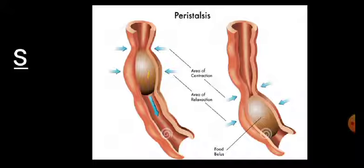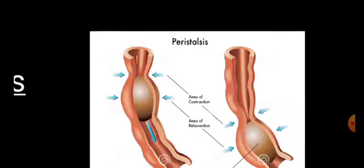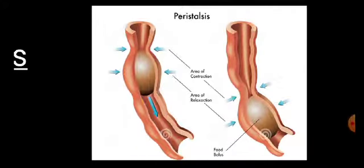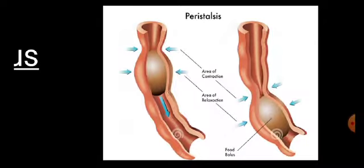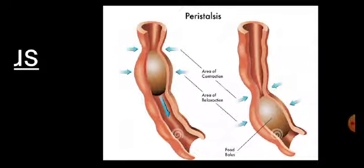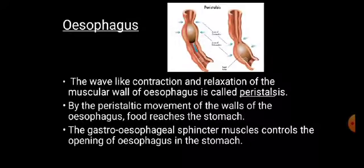This is the food bolus and these are the walls of the esophagus undergoing contraction. When this part undergoes contraction and the adjacent part undergoes relaxation, it moves the food bolus to the next region. Again, the contraction and relaxation of the next region moves the food bolus further down, and thus food reaches the stomach.